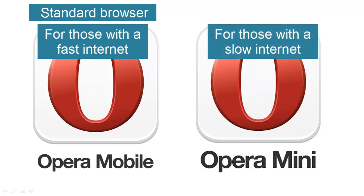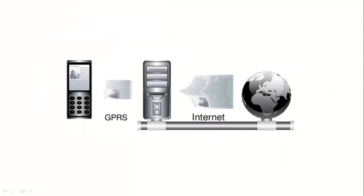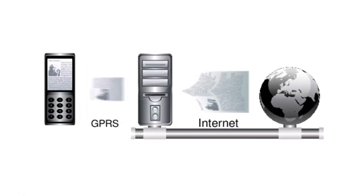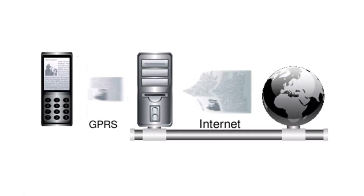When you use Mini, the information being sent to your phone is first passing through an Opera server, which strips it down so that less data is transferred. This might mean that some elements of the page don't load quickly, but it is perfect for those who need quick surfing on a slow connection. Overall, whether you go for standard mobile Opera or Opera Mini will depend on your internet connection and surfing requirements.